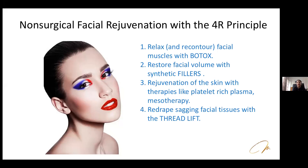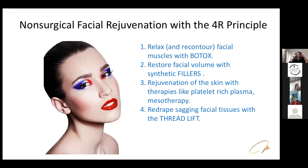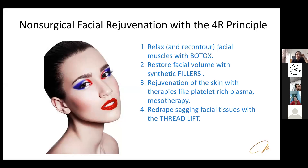Fourth, re-draping sagging facial tissues with thread lift. There are two types of threads: monothreads, inserted in a free-floating manner that act as a stimulus — initiating an inflammatory response, stimulating fibroblasts, and promoting collagen production; and cog threads, which have barbs with a velcro-like appearance that mechanically lift sagging tissues.